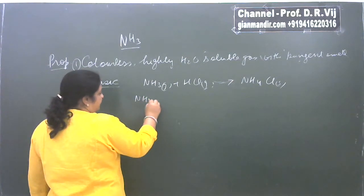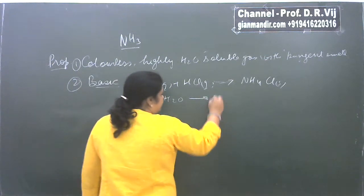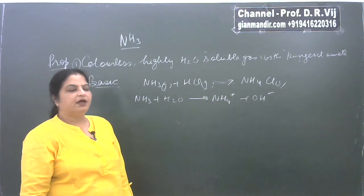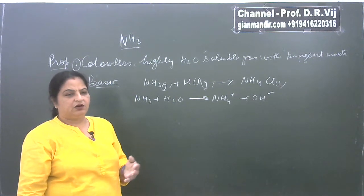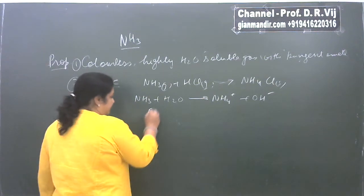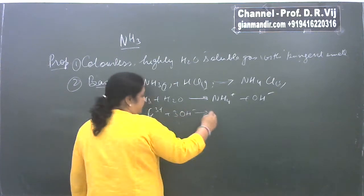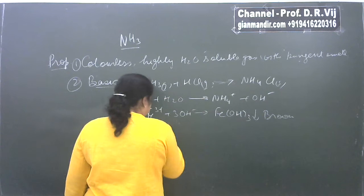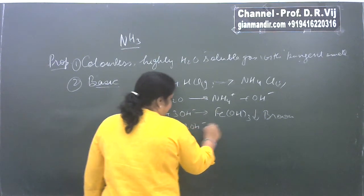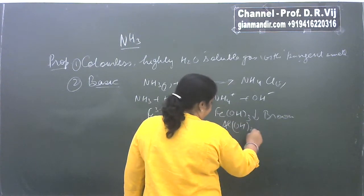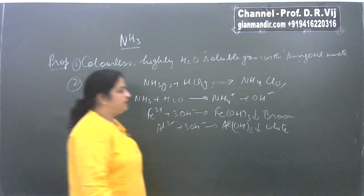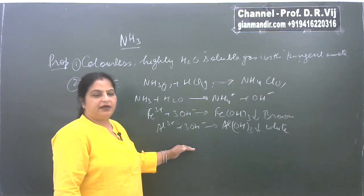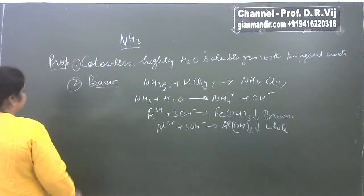Because of its basic nature, when ammonia gets dissolved in water, it produces free hydroxide ions in solution. Because of these free hydroxide ions, the aqueous solution of ammonia can be used for detection of specific metal ions. For example, if ferric ions are present in solution, they react with hydroxide ions to form the brown precipitate of ferric hydroxide. Similarly, if aluminium ions are present, they get precipitated as aluminium hydroxide as a white precipitate. In this way it is used in qualitative analysis of basic metal ions.